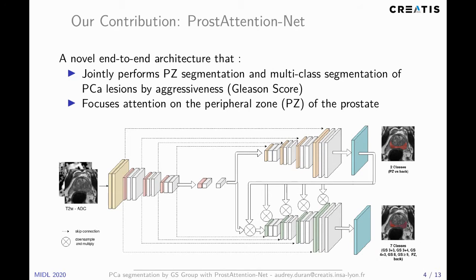and five corresponding to the different grading of PZ lesions. The output probabilistic map of the PZ decoder serves as a soft attention map to the lesion decoder branch. The idea is to enforce the tumor prediction to be within the PZ by shutting down the neurons located outside the PZ.